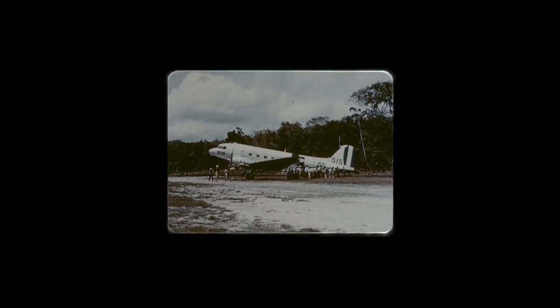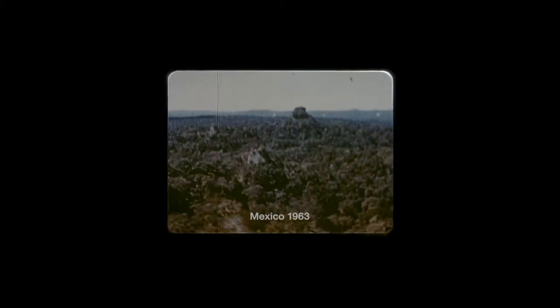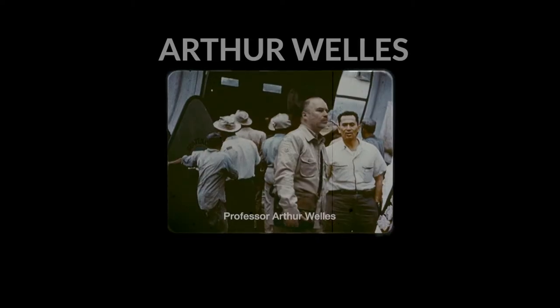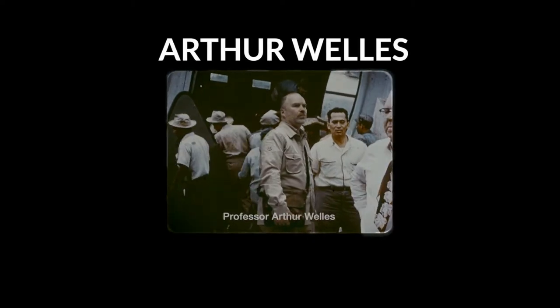The movie begins with footage from 1963 in Mexico. The video was made by an archaeologist named Arthur Wells. In the video, Arthur is seen inspecting a structure hidden deep in the forest. The structure contains strange symbols and heaps of chained human skeletons, indicating they must have been sacrificed. From deep underground, a mysterious box is retrieved.